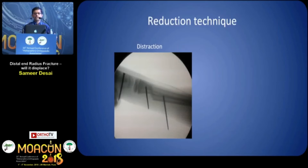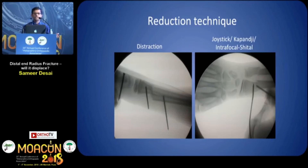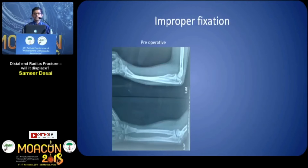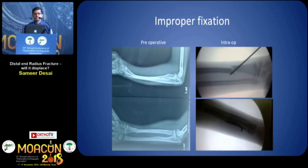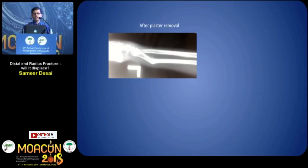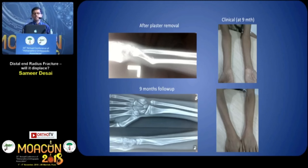If you decide to do reduction, there are various techniques — you can either use distraction, a joystick, or the intrafocal pin method as described by Sheetal. Here is an example of improper fixation: this child had a distal radius fracture, a K-wire was placed but it displaced. However, this fracture remodeled after around 9 months.